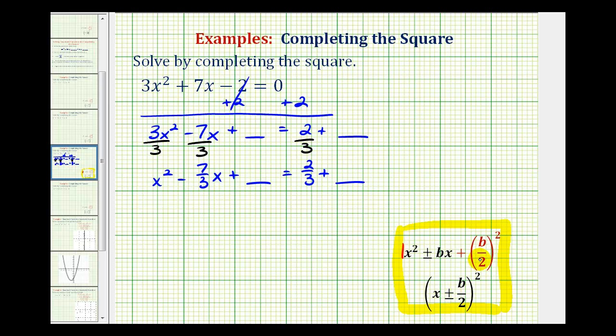Remember, dividing by 2 is the same as multiplying by 1/2. So it's probably more convenient if we use (1/2 × b)², since in this problem b is the fraction -7/3.